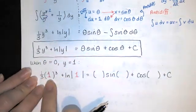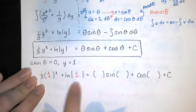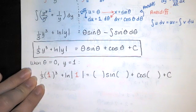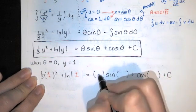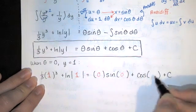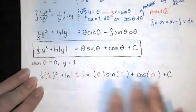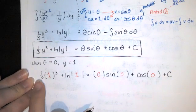So that was one third times y cubed plus natural log of the absolute value of y. Y is one. Over here theta is zero. So we have zero sine of zero plus cosine of zero plus c on the right hand side.